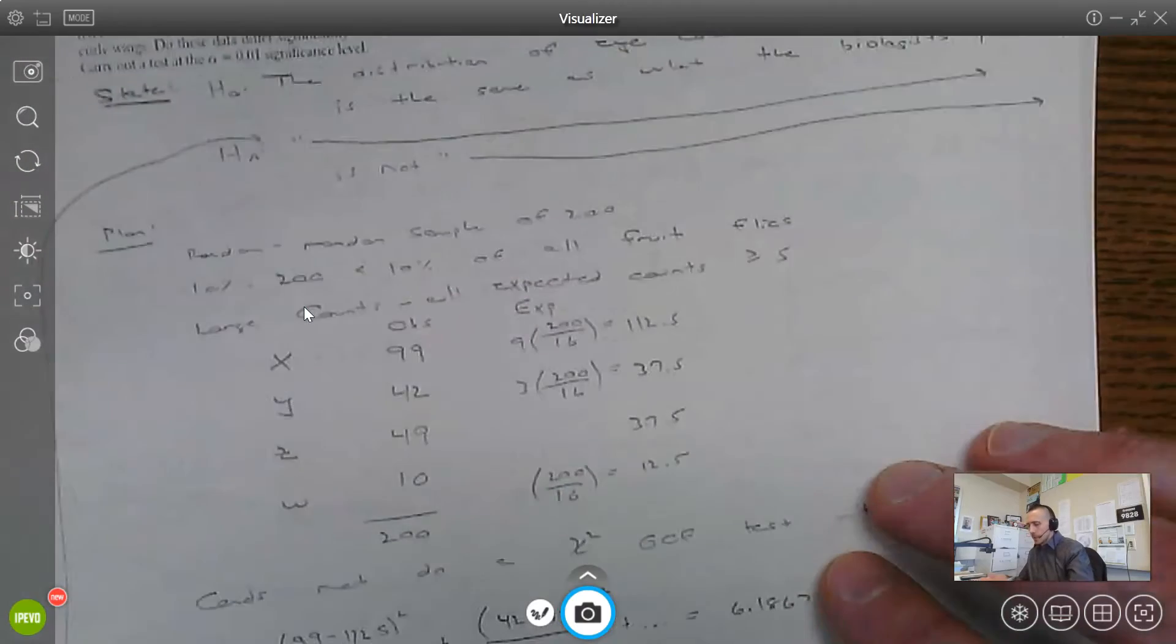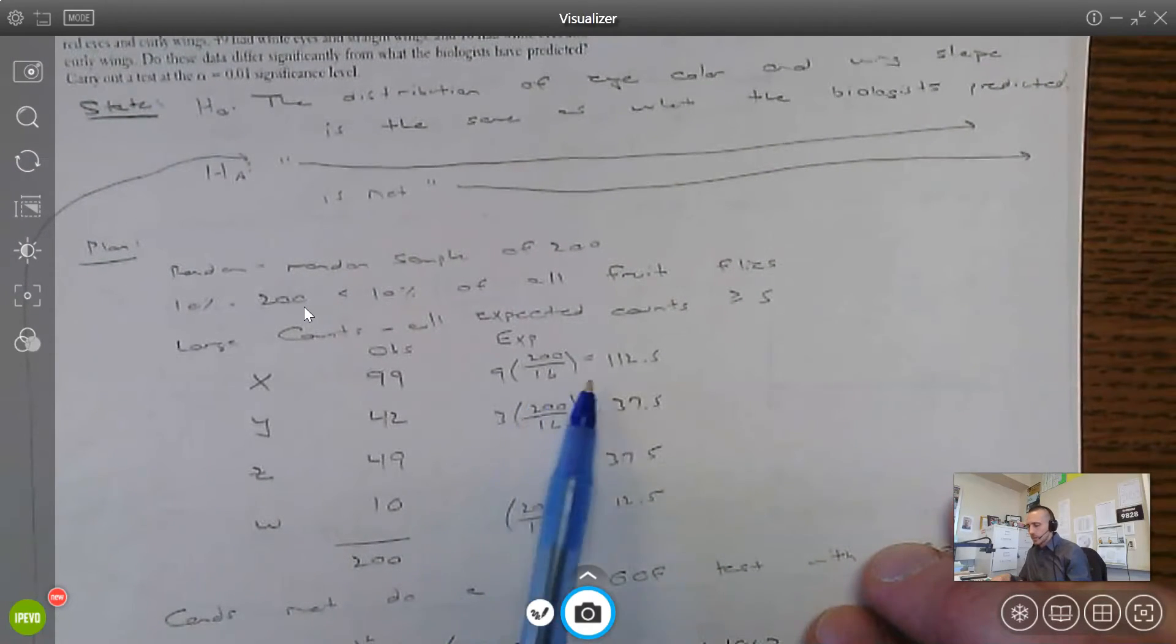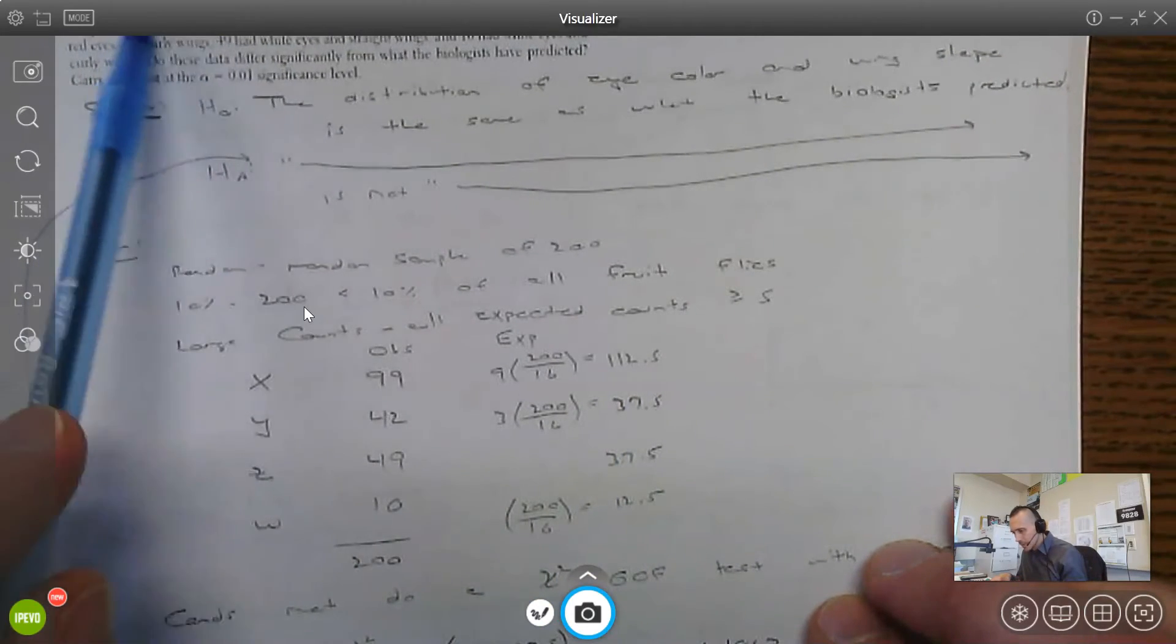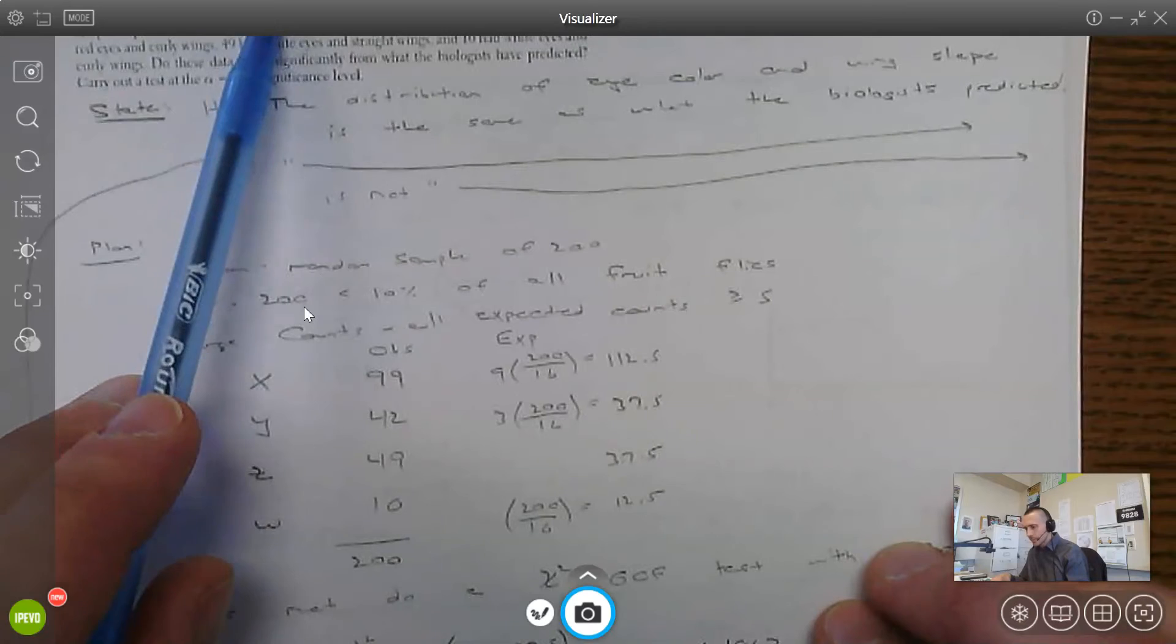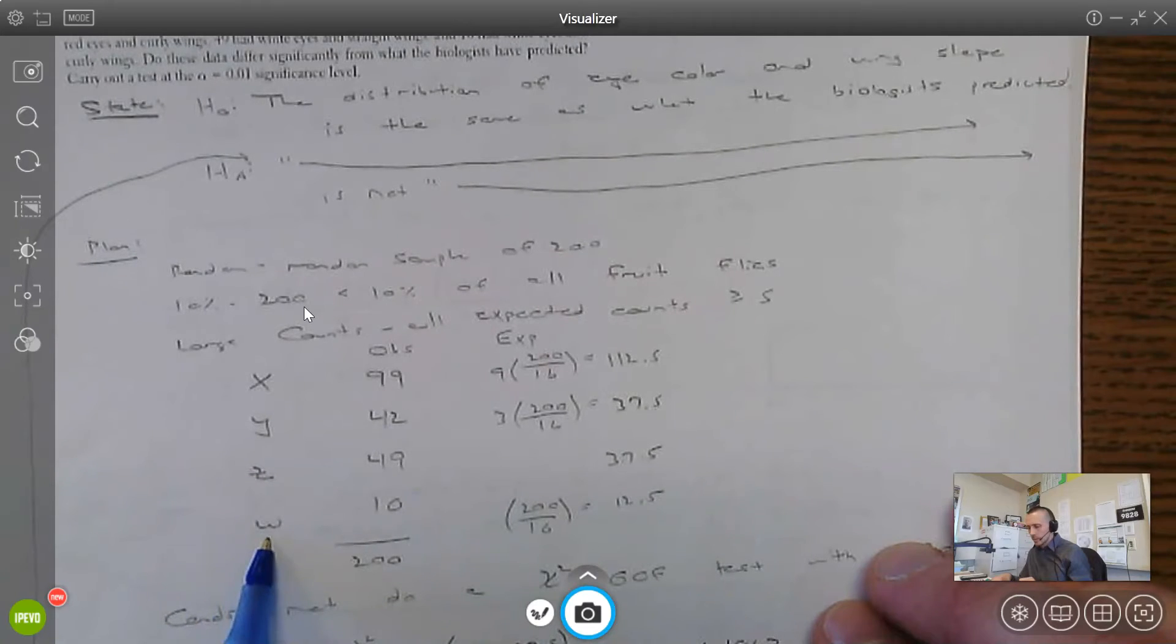So then to get the expected counts, I'm really doing nine times that 12 and a half. So I'd expect 112 and a half of them to have this certain X gene, they called it. And then three times 12 and a half, 37 and a half would have the Y gene, Z gene, and the one, the 12 and a half, we expect to have that W gene.